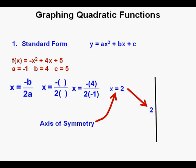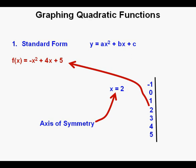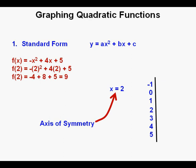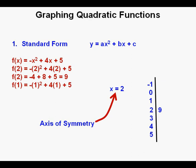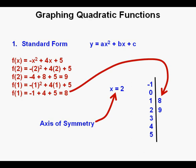The equation x equals 2 is our axis of symmetry, so input value 2 becomes the centerpiece of our table. We fill in three x-coordinates above and below 2. We place 2 into the function to find the vertex: f of 2 equals negative 2 squared plus 4 times 2 plus 5, which simplifies to negative 4 plus 8 plus 5, equaling 9. So the vertex is at (2, 9). For input 1, f of 1 equals negative 1 plus 4 plus 5, which equals 8. Due to the symmetry of a parabola, the other side also gives output 8.